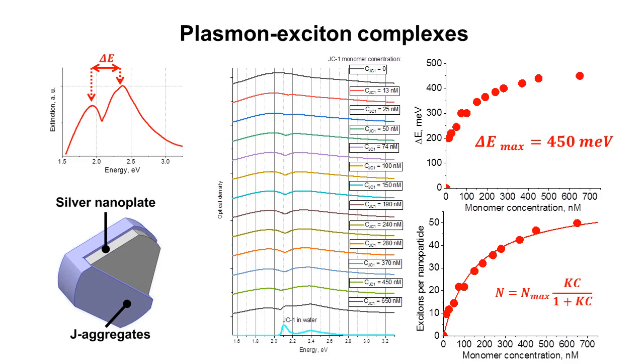Moreover, with increasing the JC1 concentration, the energy of the splitting between two polariton peaks increased. However, the dependence was saturated. One can see the presence of the J-band in the resulting spectrum at higher concentration than the concentration of saturation.